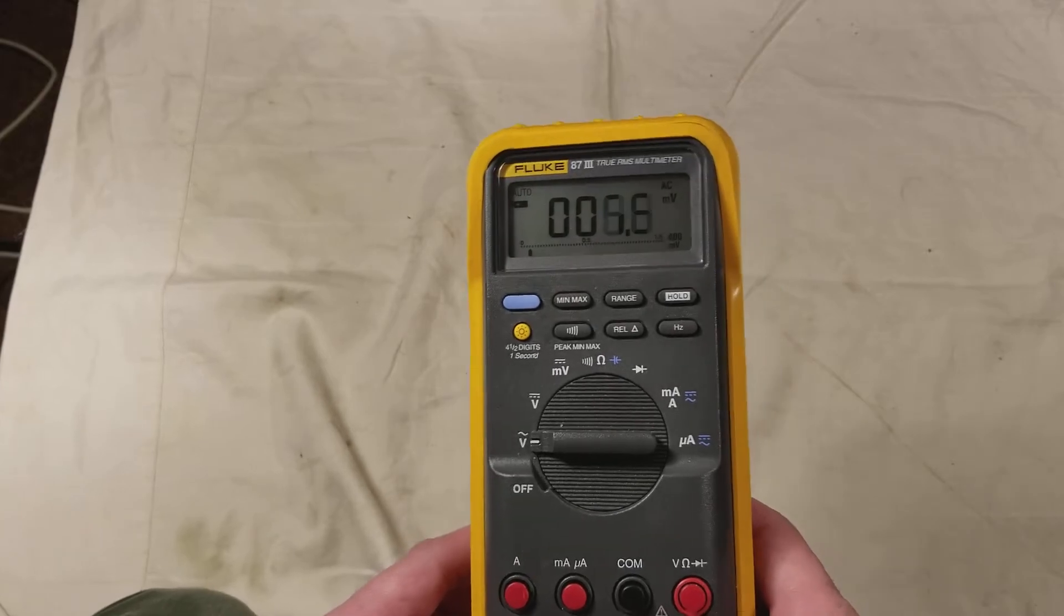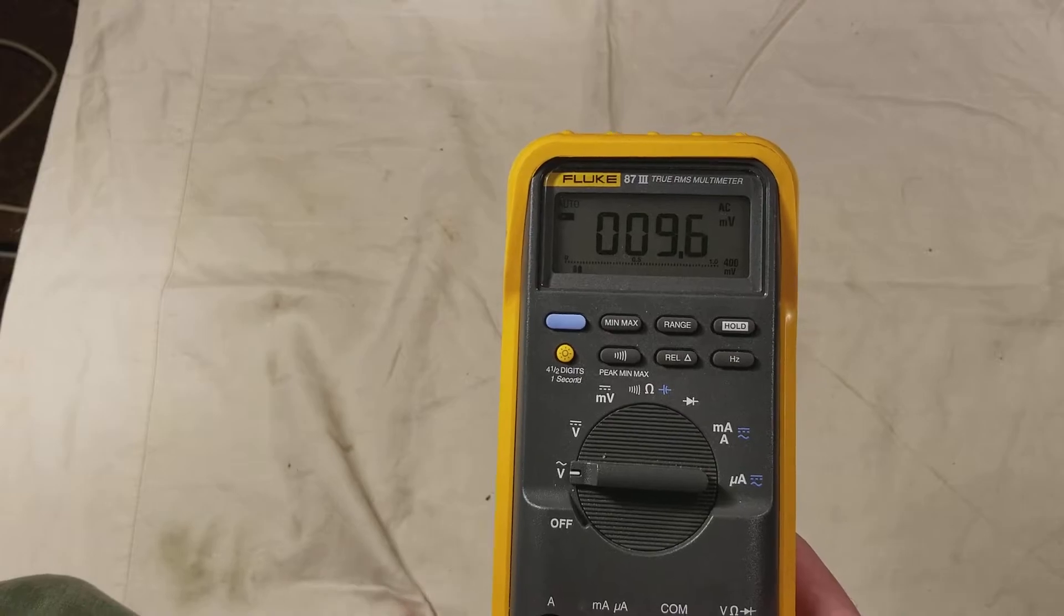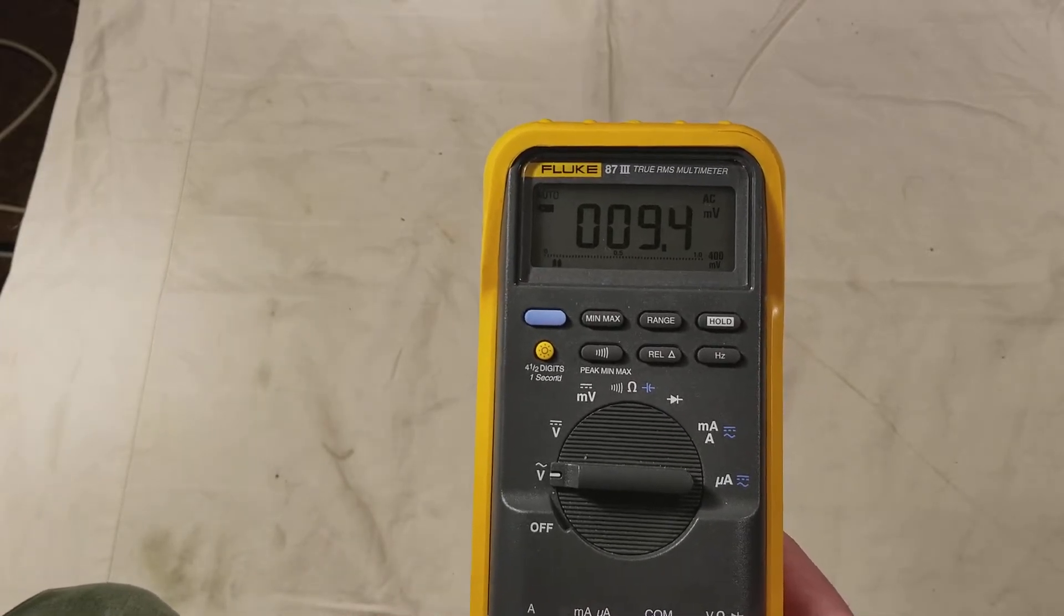The Fluke 87 does pretty much all the functions you need, including more advanced stuff like relative deltas and high resolution.